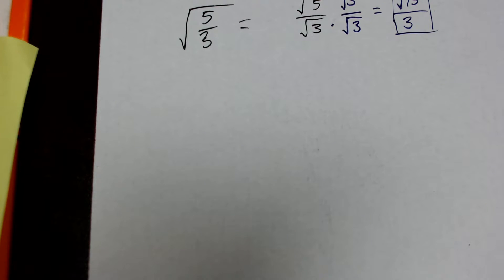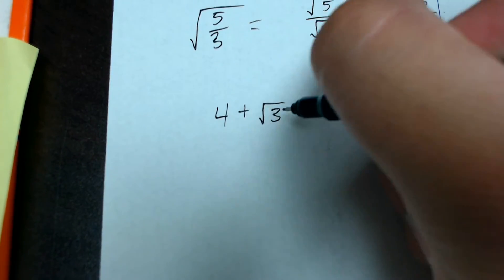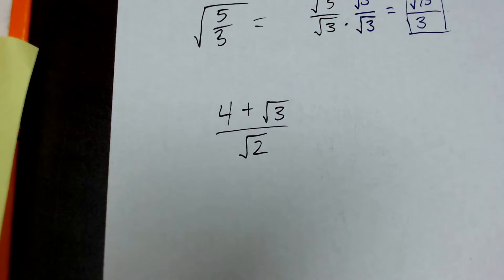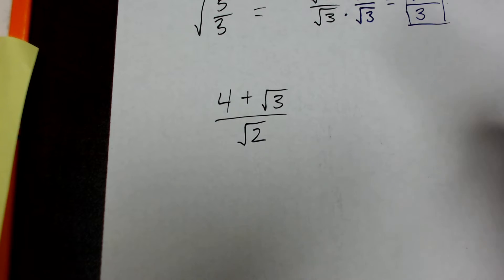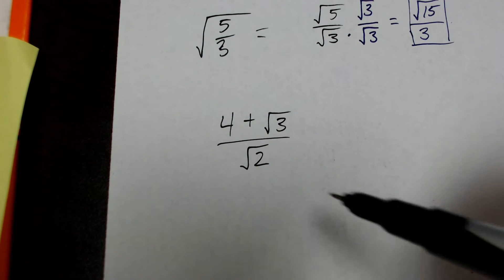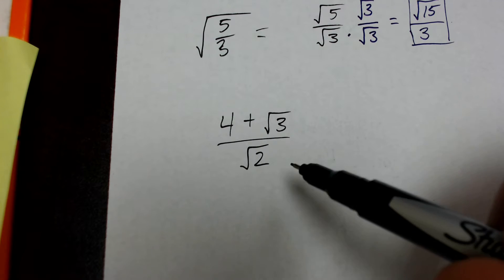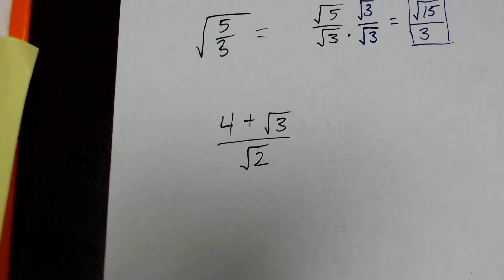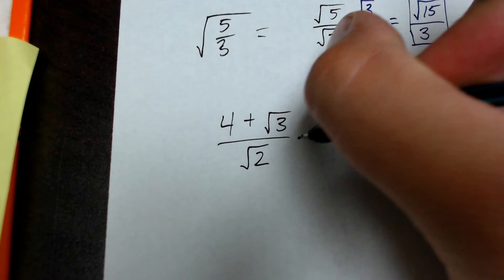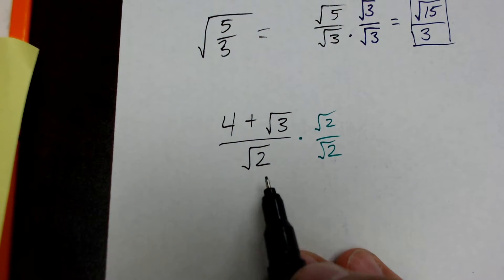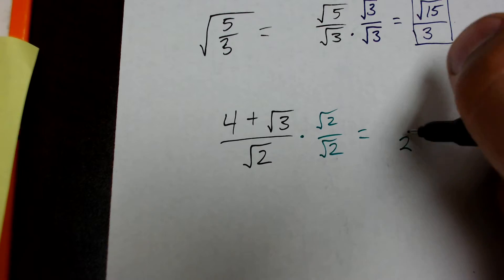Next example is going to be, let's say I've got 4 plus the square root of 3 over the square root of 2. Now, in this example, the radical is already separated for me, so I don't have to do that separation step that I did up here, but I still have to rationalize the denominator. So, all I'm going to do is multiply by a value of 1 written with the denominator or the square root of 2. So, I multiply this by root 2 over root 2. The square root of 2 times the square root of 2 equals 2.